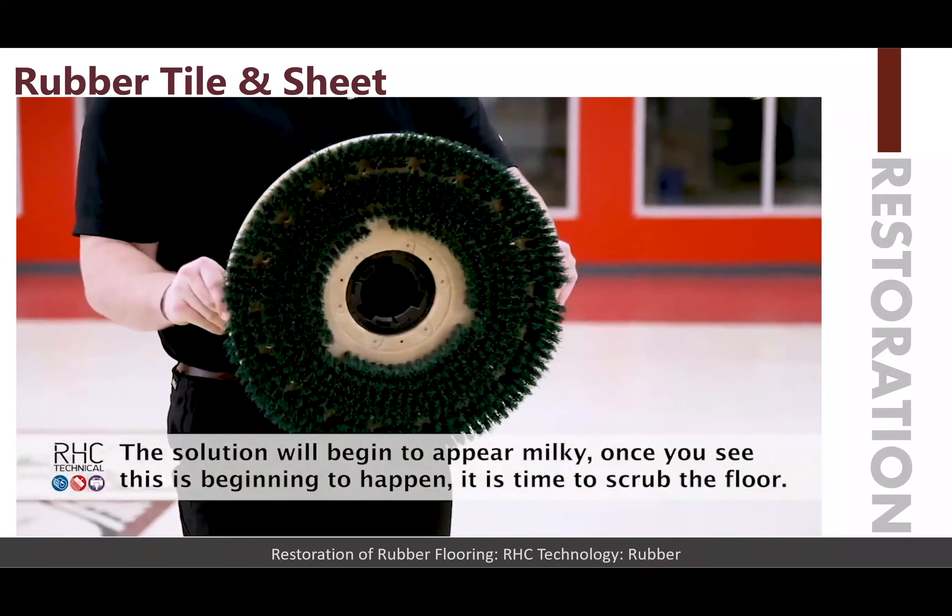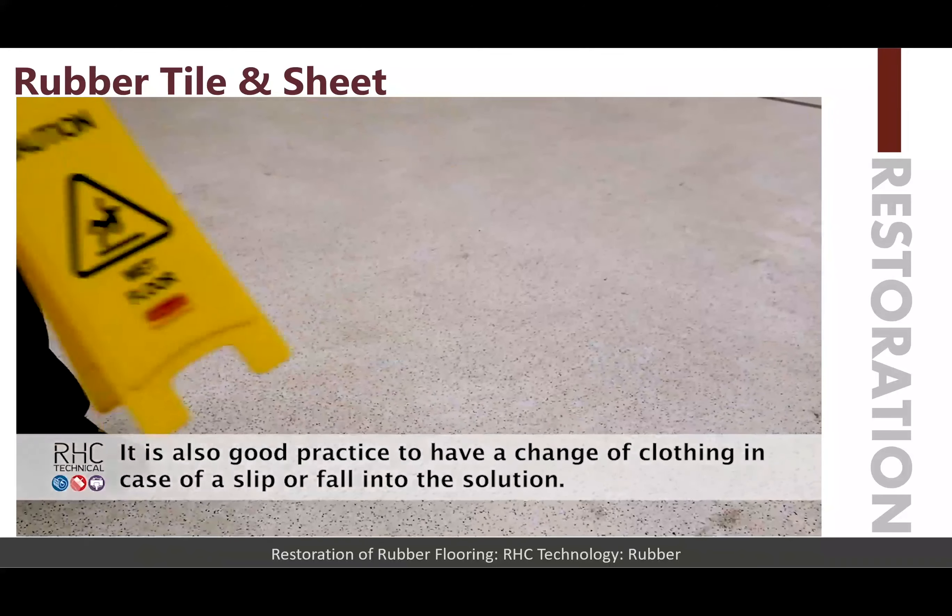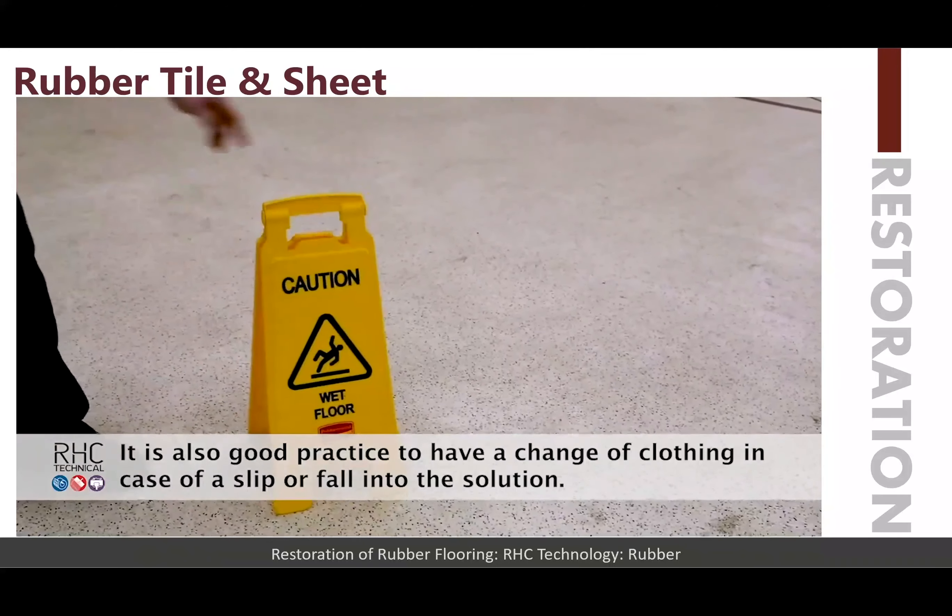Using a rotary floor machine with a malgrit scrub brush attachment, scrub the floor in an overlapping circular pattern to achieve an even scrub across the flooring material. A brush is used here because this rubber flooring is textured — brushes perform better than traditional floor pads on textured flooring, as pads do not get down into the valleys of the texture. Note that the floor will be very slick with the emulsified finish, which can be dangerous, so wet floor signs and blocking off the area is critical.